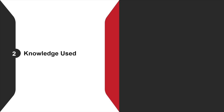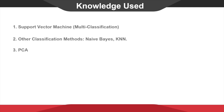Now let's talk about the knowledge we use. The methods we implemented in this project mainly come from what we have learned but didn't have much chance to try out in text classification, such as multi-class support vector machine. We also found that other classification methods use our documents for comparison. We also decided to give PCA a try, which we just learned two weeks ago, to see if it works well on this particular dataset.